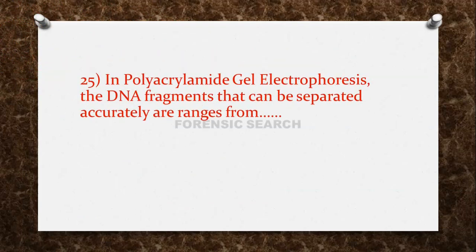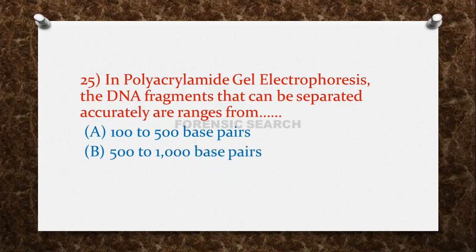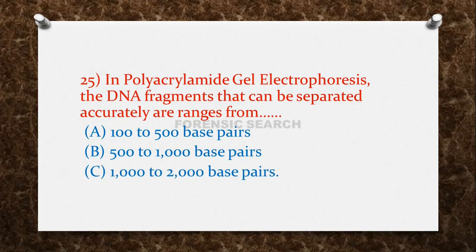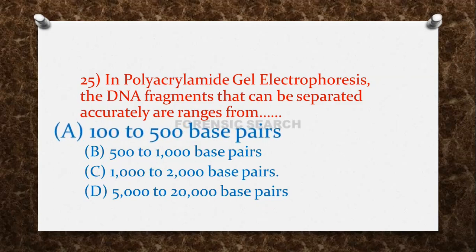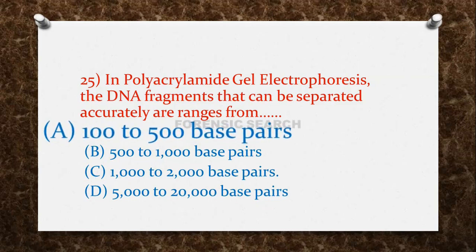The next question: in polyacrylamide gel electrophoresis, the DNA fragments that can be separated accurately range from — Option A: 100 to 500 base pairs. Option B: 500 to 1000 base pairs. Option C: 1000 to 2000 base pairs. Option D: 5000 to 1000 base pairs. The correct answer is option A — 100 to 500 base pairs.